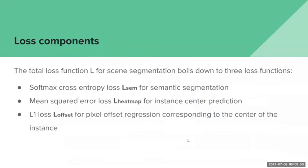Another contribution of this paper is that they improve the traditional loss functions used in such tasks, mainly the softmax cross entropy loss, which is called LSEM here for semantic segmentation. In addition to that, they added two extra components which help improve the performance on object detections and segmentation masks. The mean squared error loss, called LHEATMAP, corresponds to predicting the center of each instance in each image. The L1 loss, called LOFFSET, is calculated for every pixel as an offset regression corresponding to the center of the instance.